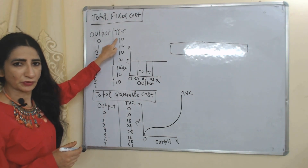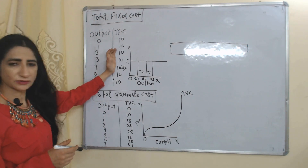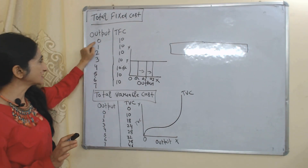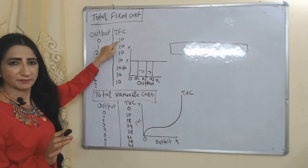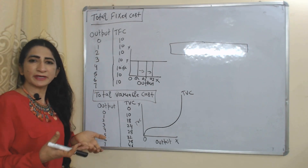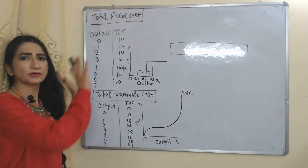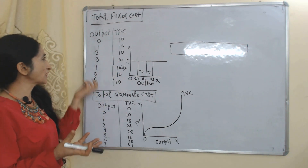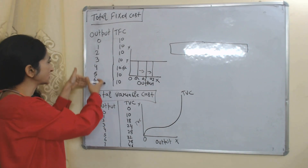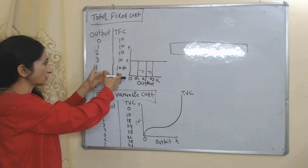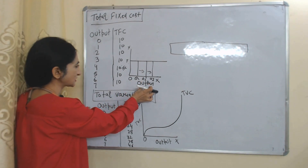You can see our output is increasing but our total fixed cost remains constant. At zero output, our total fixed cost is 10 because we have to pay rent, interest, or property tax no matter whether we are doing output or not. That is why at zero production we have 10 as total fixed cost, but as output increases, total fixed cost remains constant.